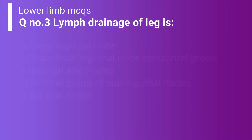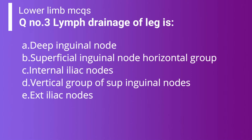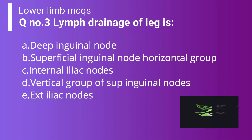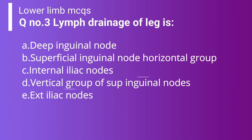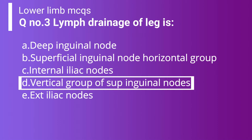Question 3 is about lymph drainage of the leg. Option A: Deep inguinal lymph node. Option B: Superficial inguinal node horizontal group. Option C: Internal iliac nodes. Option D: Vertical group of superficial inguinal lymph nodes. The correct answer is Option D — vertical group of superficial inguinal lymph nodes — because the rest of the options are false. Deep inguinal lymph nodes receive further transmission. Internal iliac nodes and external iliac nodes receive lymph supply from the pelvis and perineum, not from the leg.